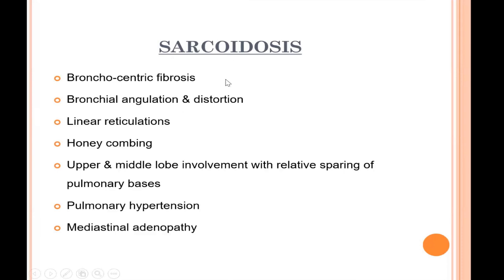Another condition with bronchocentric fibrosis is sarcoidosis. In sarcoidosis, the disease follows a perilymphatic distribution — granulomas or nodules form around the bronchi, interlobular septa, and sub-pleural interstitium. When these granulomas undergo cicatrization or fibrosis, they lead to significant bronchial angulation and distortion, with development of linear reticulations along interlobular septa. Significant alveolitis in sarcoidosis leads to honeycombing that is often both peripheral and central, with predominantly upper and middle lobe involvement. Pulmonary hypertension and mediastinal adenopathy can support the diagnosis and should be looked for in mediastinal windows.